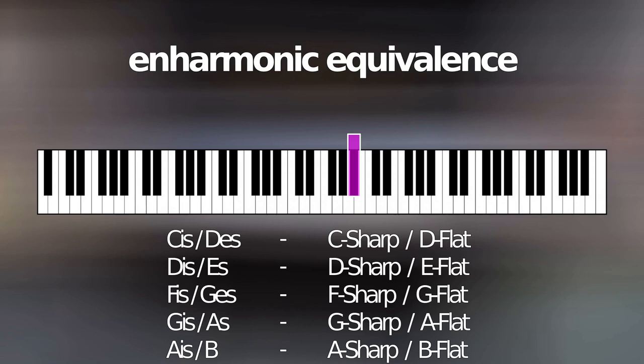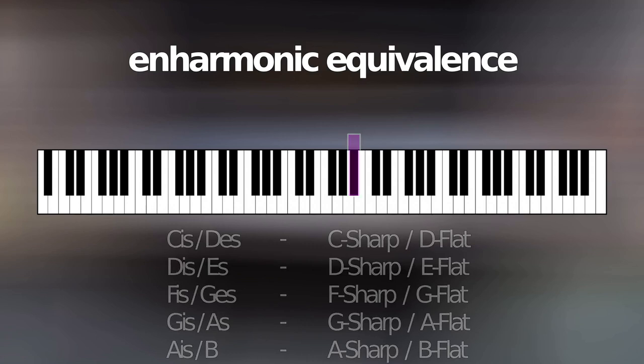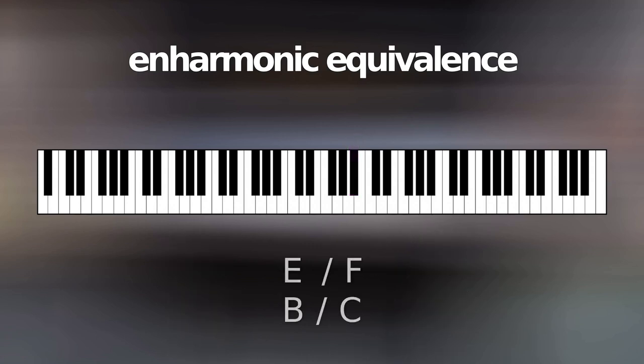And the enharmonic equivalence affects not only the black keys, but also for example the E and the F and the B and the C. A raised E is then an F, a lowered F is an E. And a raised B is a C and a lowered C is a B.